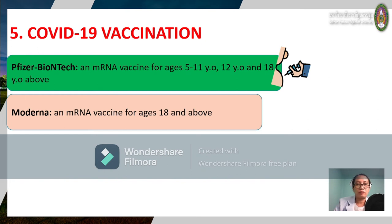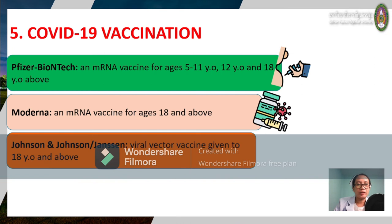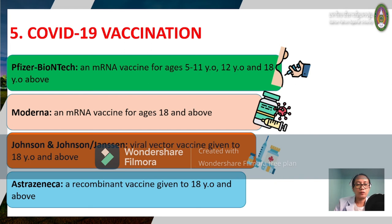Johnson & Johnson is a single-dose viral vector vaccine administered to 18 years old and above recipients. AstraZeneca is a recombinant vaccine given only to 18 years old and above recipients.